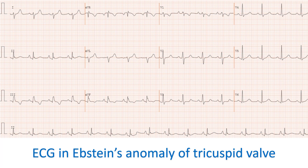Absence of right bundle branch block (RBBB) in sinus rhythm in patients with Epstein's anomaly and supraventricular tachycardia is a highly sensitive and specific indicator of the presence of an ipsilateral accessory pathway. Usually, an RBBB pattern appears in these cases after successful radiofrequency catheter ablation. Absence of RBBB pattern on ECG after catheter ablation should raise suspicion for other accessory pathways missed during ablation. This absence of RBBB is explained by activation of the right ventricle by the accessory pathway, producing narrowing of the QRS complex.